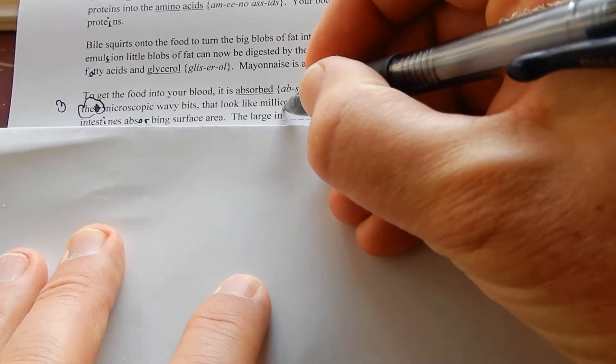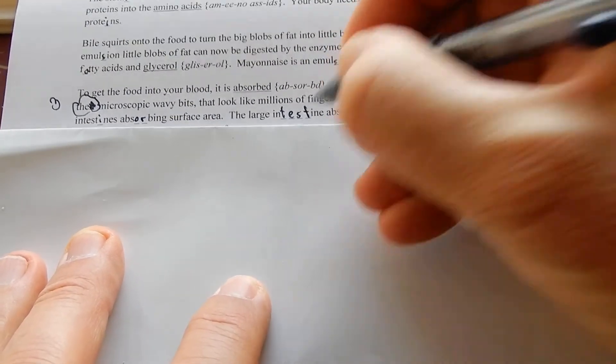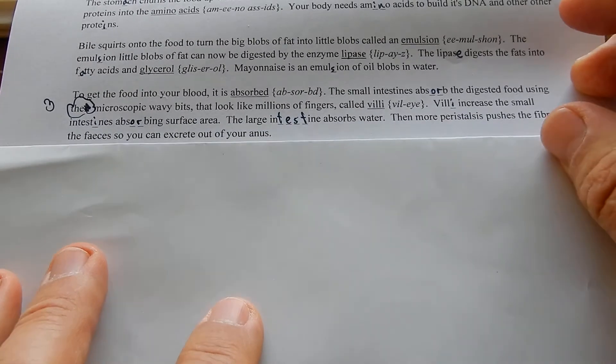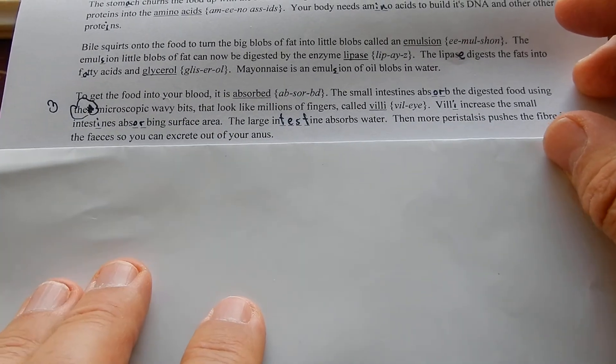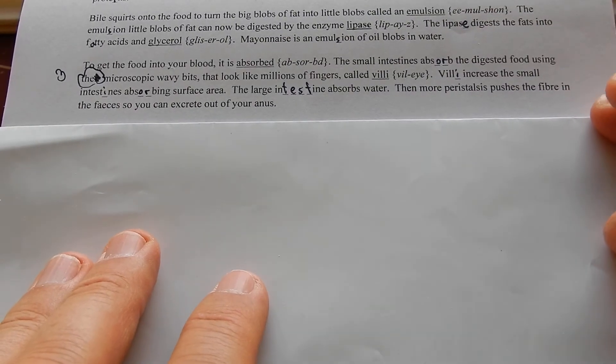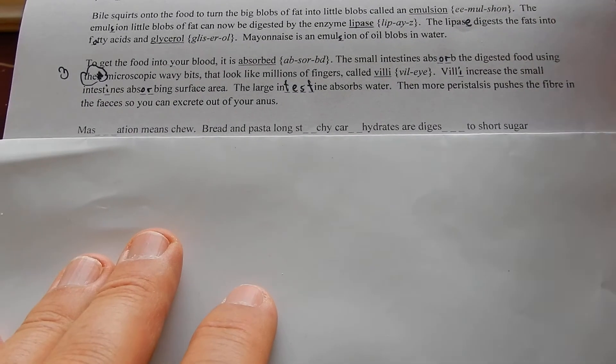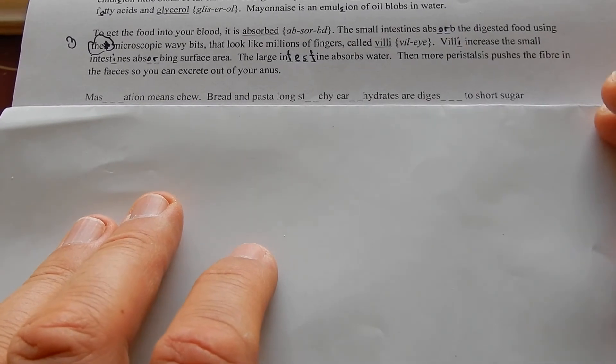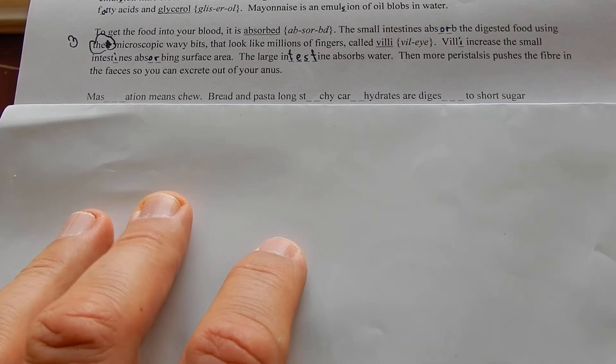The large intestine absorbs water. Then more peristalsis pushes the fibre in the feces so you can excrete out of your anus. That's why you need fibre. Otherwise you can't properly excrete.